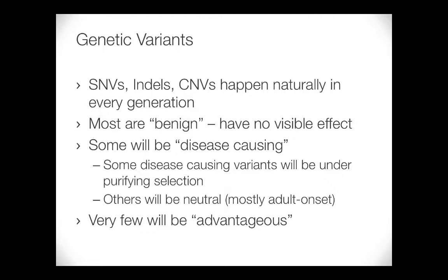That's a classic example of an advantageous mutation, but those are very rare. Once they happen and if they're really advantageous, very soon everybody has it — because if you keep the evolutionary pressure, those people who have the mutation are more likely to reproduce. At least that used to be the case until we have medicine, which gets in the way of evolution.